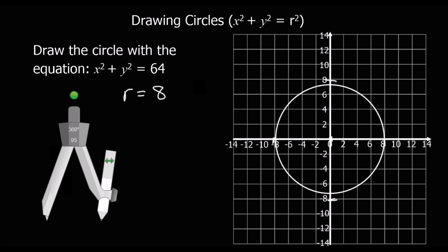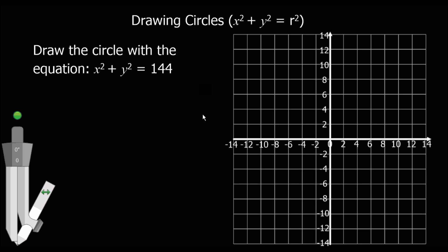There is obviously something a bit wrong here. And finally, we've got x squared plus y squared equals 144. So in this case, the radius is going to be 12 because 12 squared is 144.